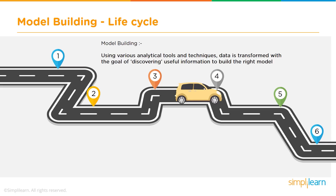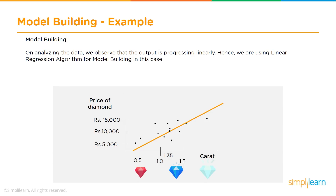The next step is model building. We've done the planning — we've decided what algorithm and what kind of model to use. Now we need to actually train or build the model so it can then be deployed. In the example we've taken, we want to find out the price of a 1.35 carat diamond. This is a linear regression problem. We have data for various carats of diamond and we pass it through a linear regression model, which can then predict the price for 1.35 carats.